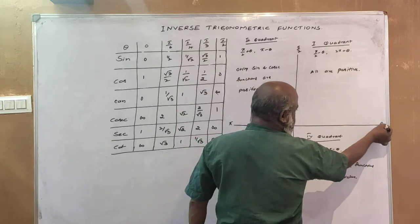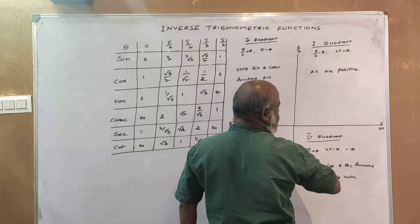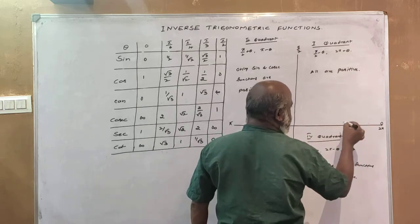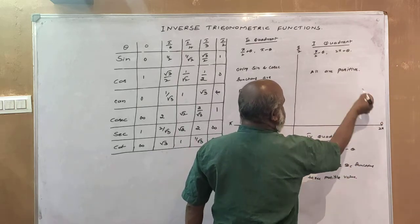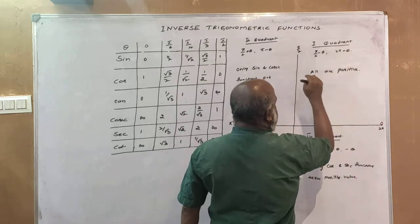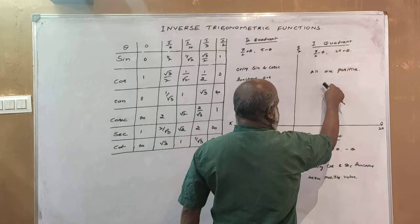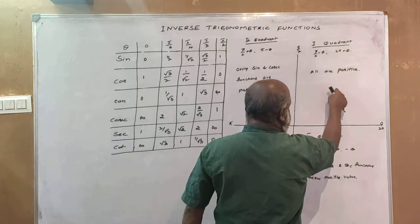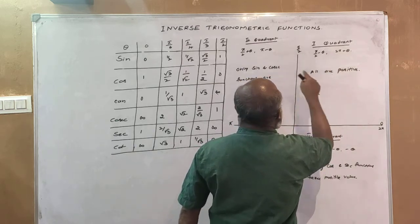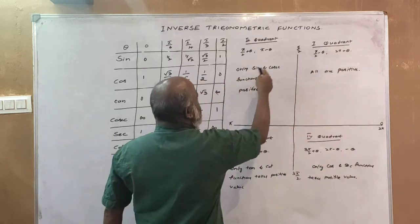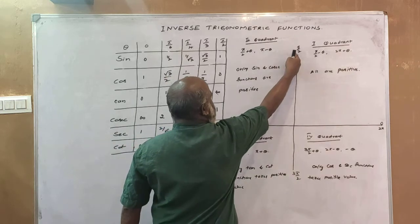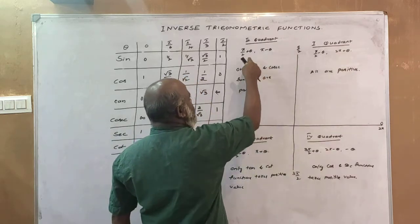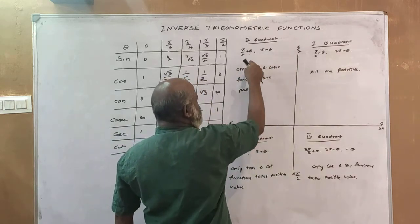Starting at this point, one round is complete. We consider angles like π/2 plus θ and π/2 minus θ. These are the allied angle transformations. The angles π/2, π/2 plus θ, π/2 minus θ, and 3π/2 are all considered in this context.